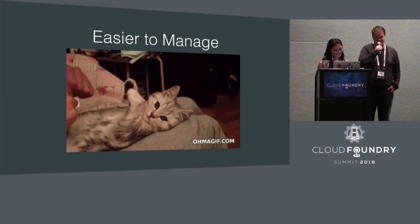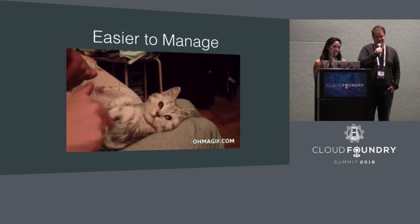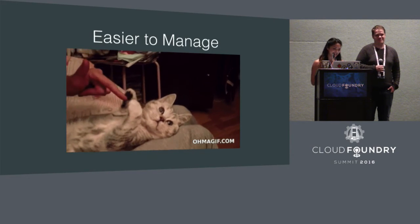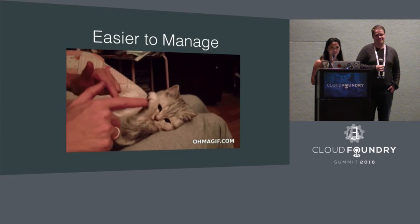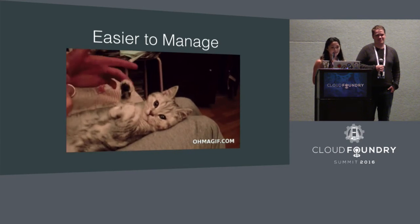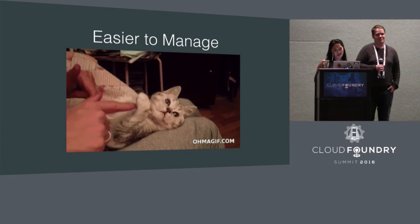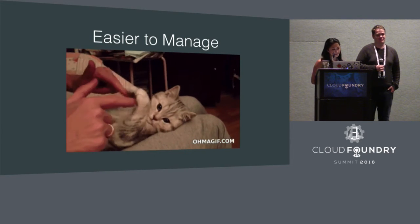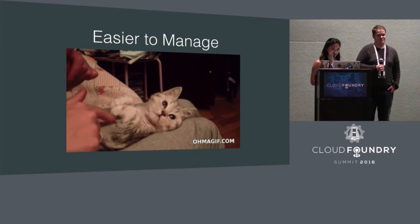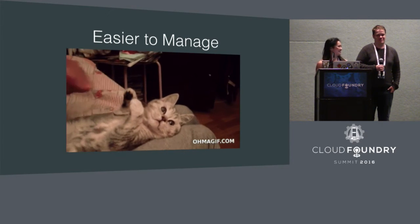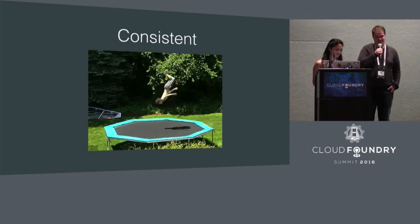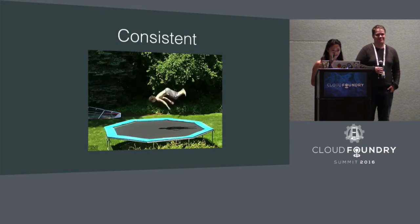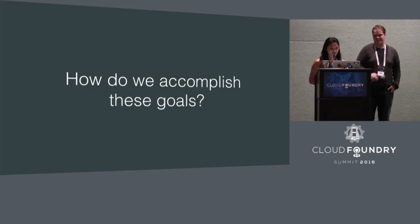Easier to manage — we want to get rid of hidden complexity and the need to have a deep understanding of the internals of Cloud Foundry. Developers shouldn't have to know that an app needs to be restaged if a new buildpack doesn't work out, and your app development process should be easy to understand and customize. Lastly, consistent — we want the API to be discoverable and unsurprising.